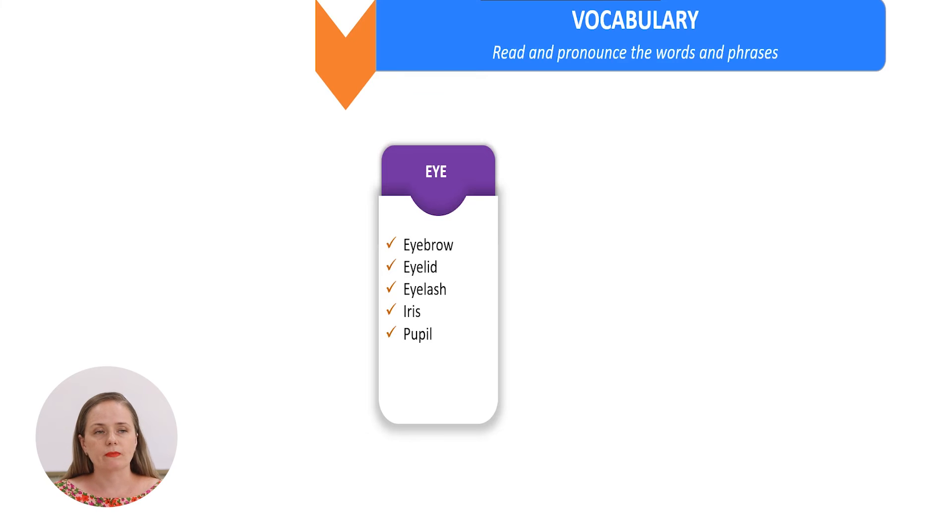As I have said, we identify people by the parts of the face and head and we will see in detail some other elements of the eye. The eyebrow, the eyelid, the eyelash, the iris and the pupil.